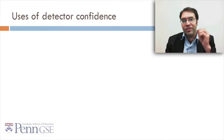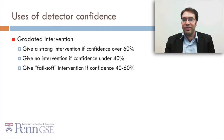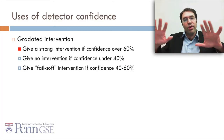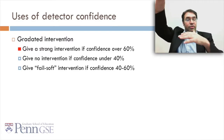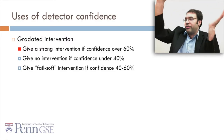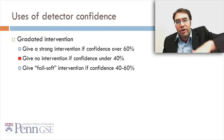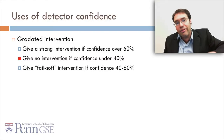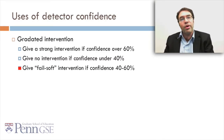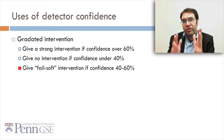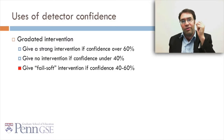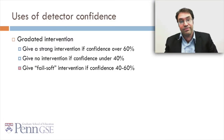You can use detector confidences in several ways. First of all, for gradated intervention. Maybe you want to give a strong intervention if the confidence is high, over 60% or 70% or whatever. Maybe you want to give no intervention at all if the confidence is under 40%. And maybe you want to give some sort of fail soft intervention — an intervention that's just not that harmful if given incorrectly — if the confidence is in between.